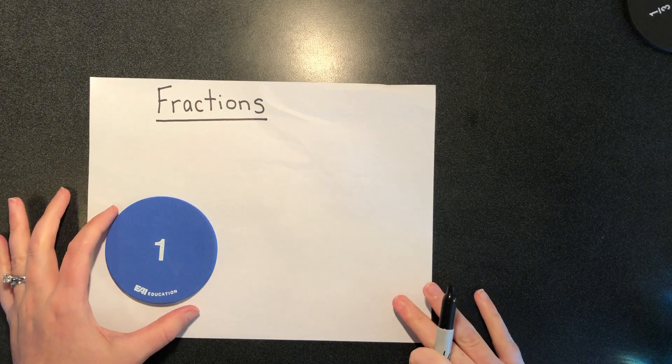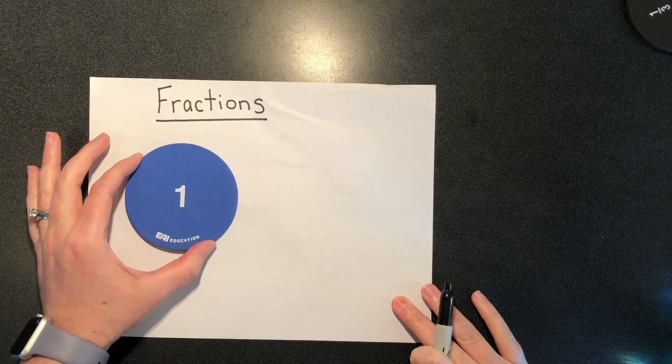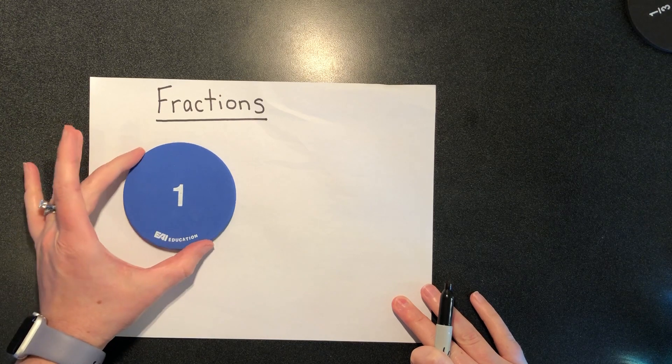So I'm going to start just by reviewing some fractions. We know that if I'm going to consider this circle to be my whole, it's one whole. It's a whole number. I have one whole.